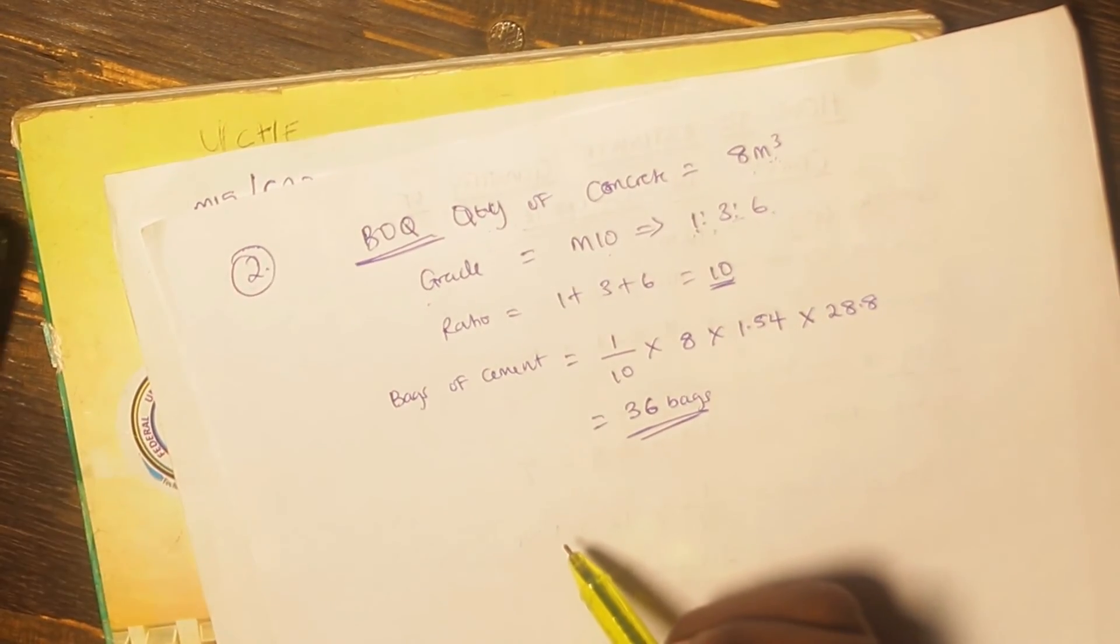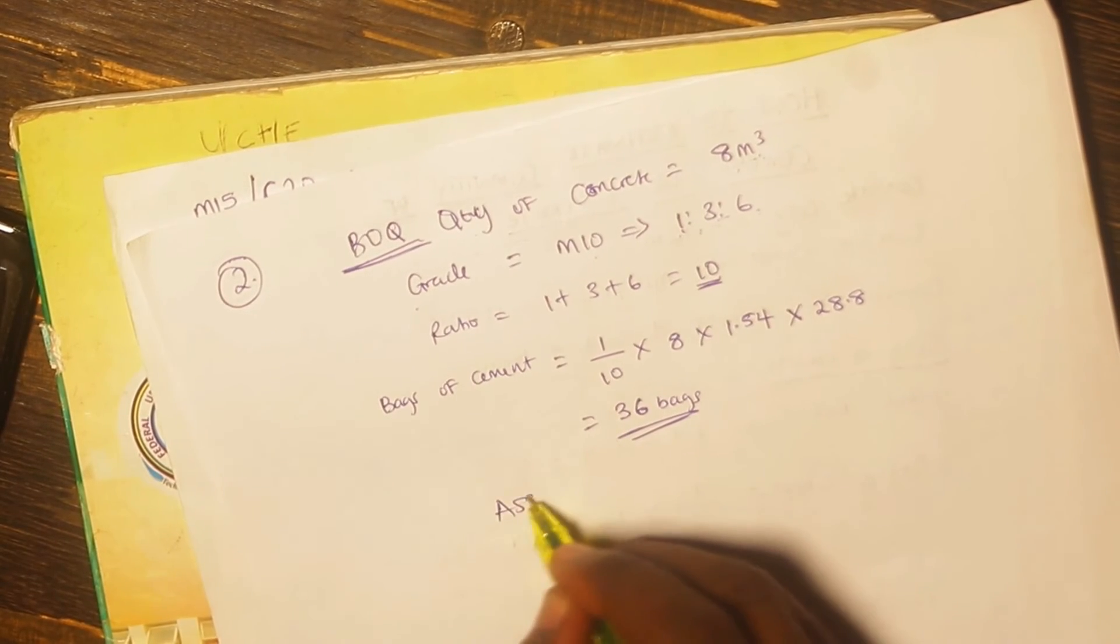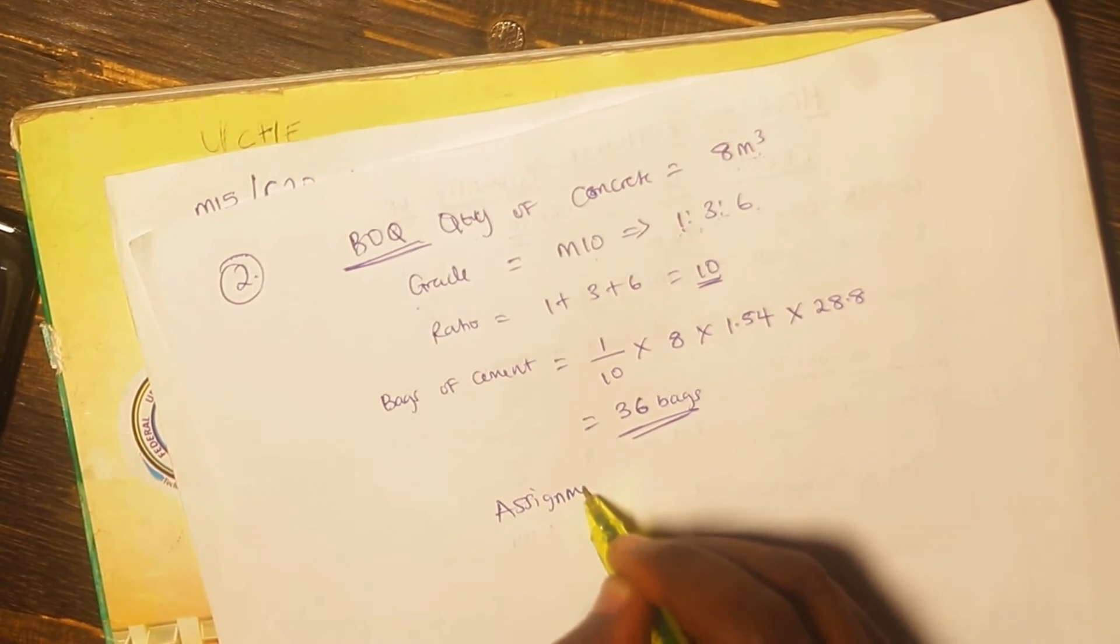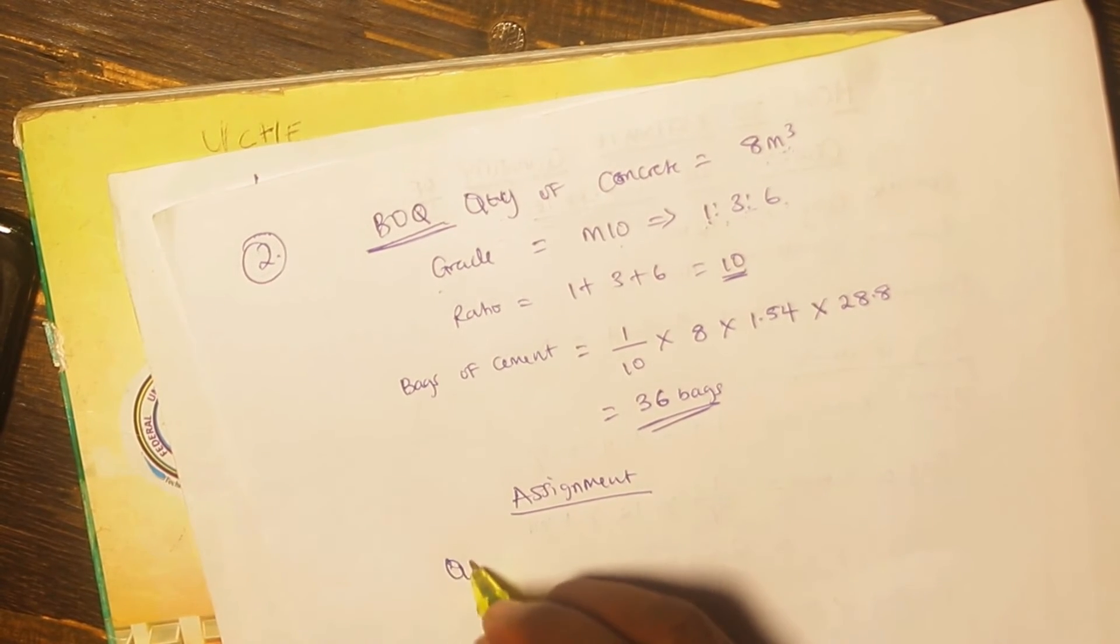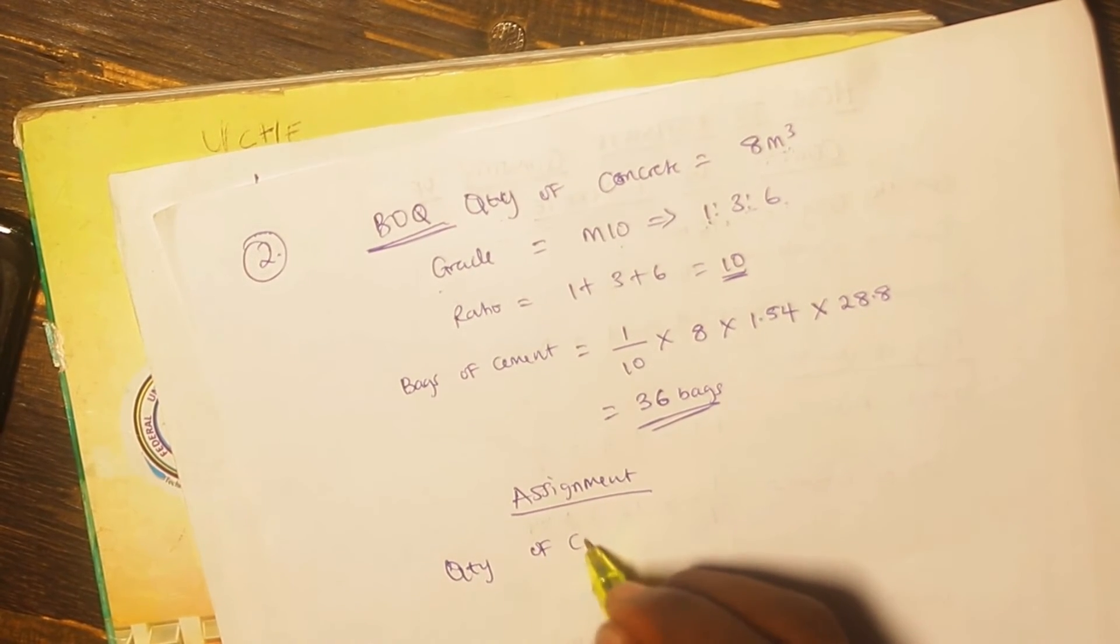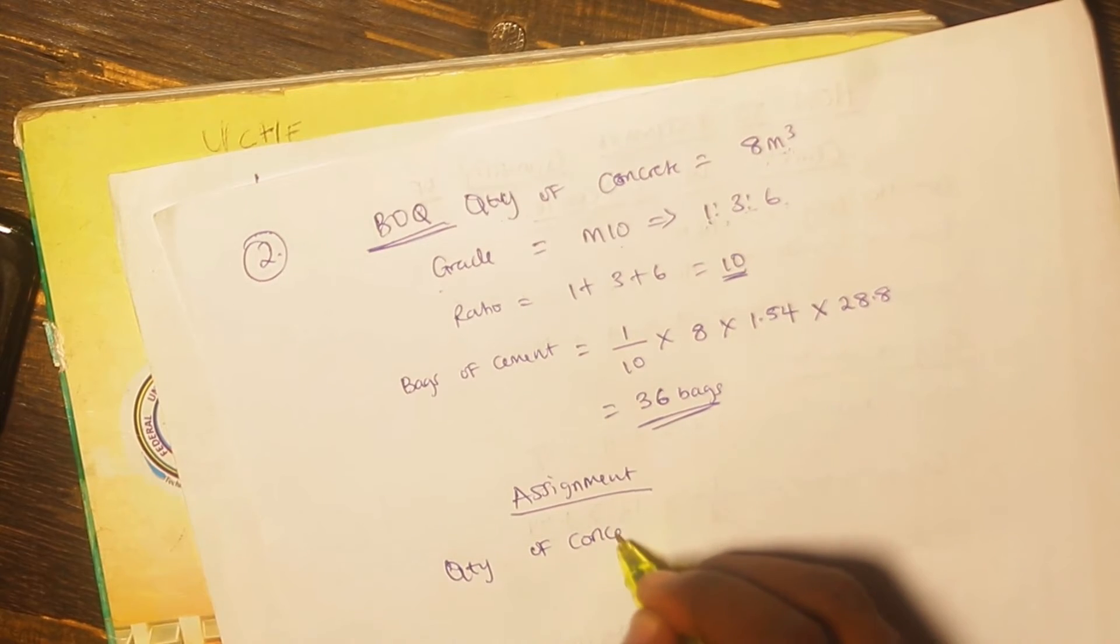So before we go from this video today, here is an assignment for you. I want you to do this as fast as possible. Try it yourself. This is a quantity of concrete in the bill of quantity.